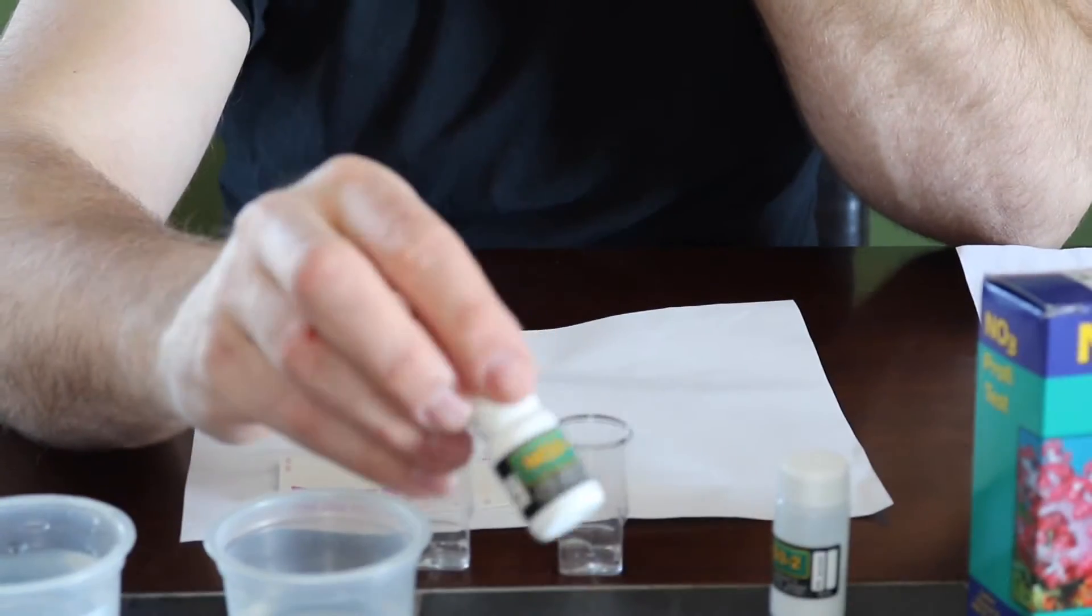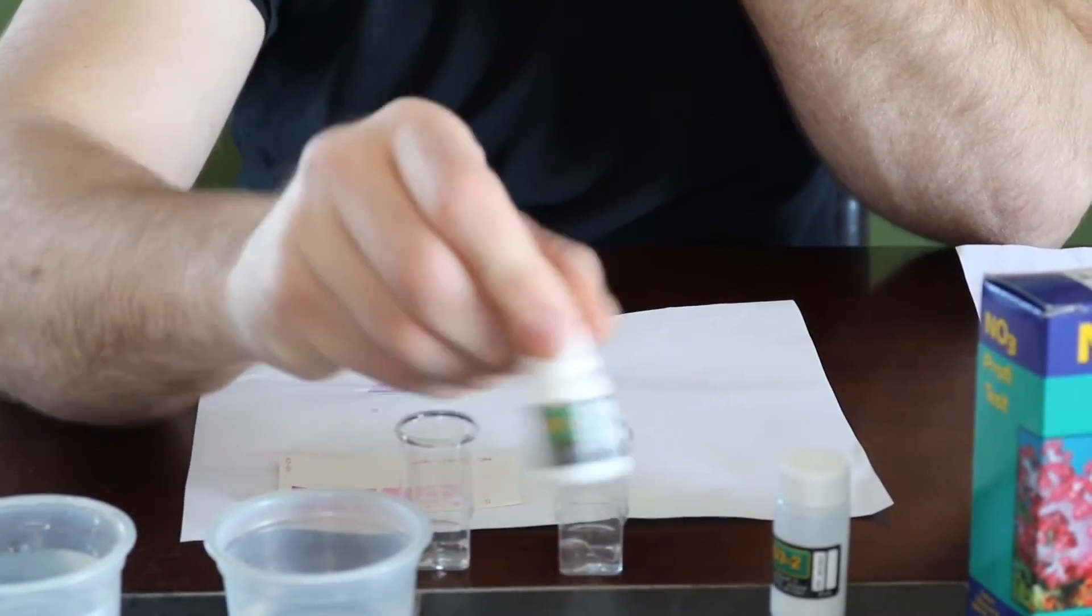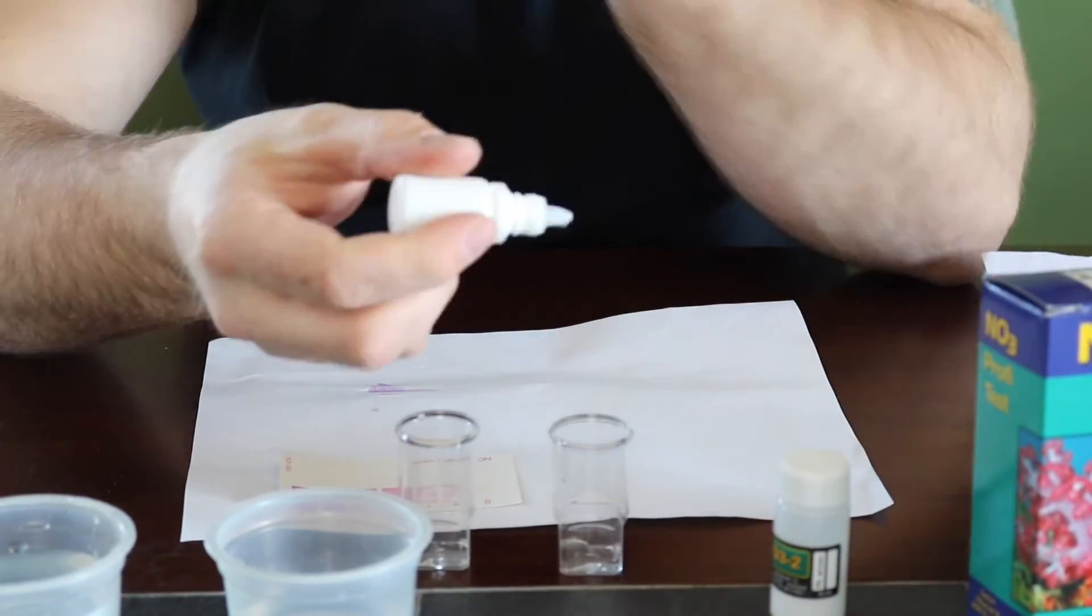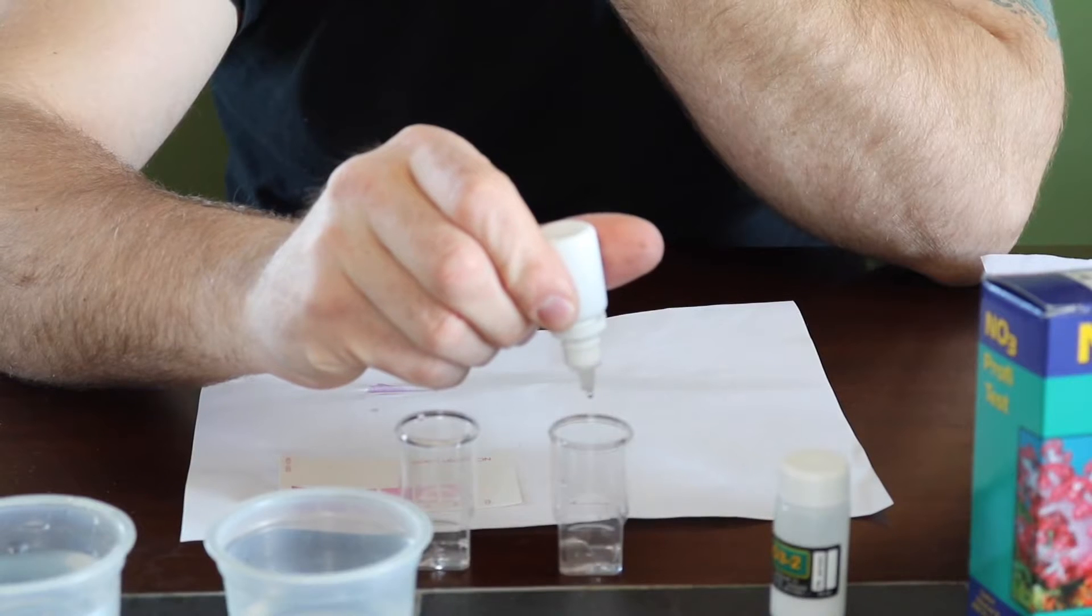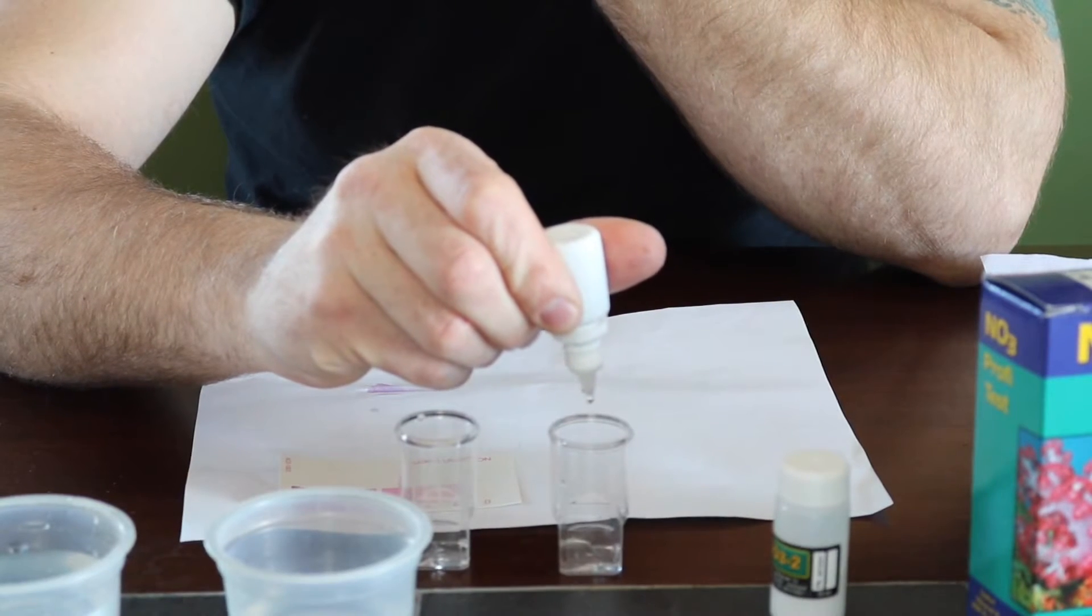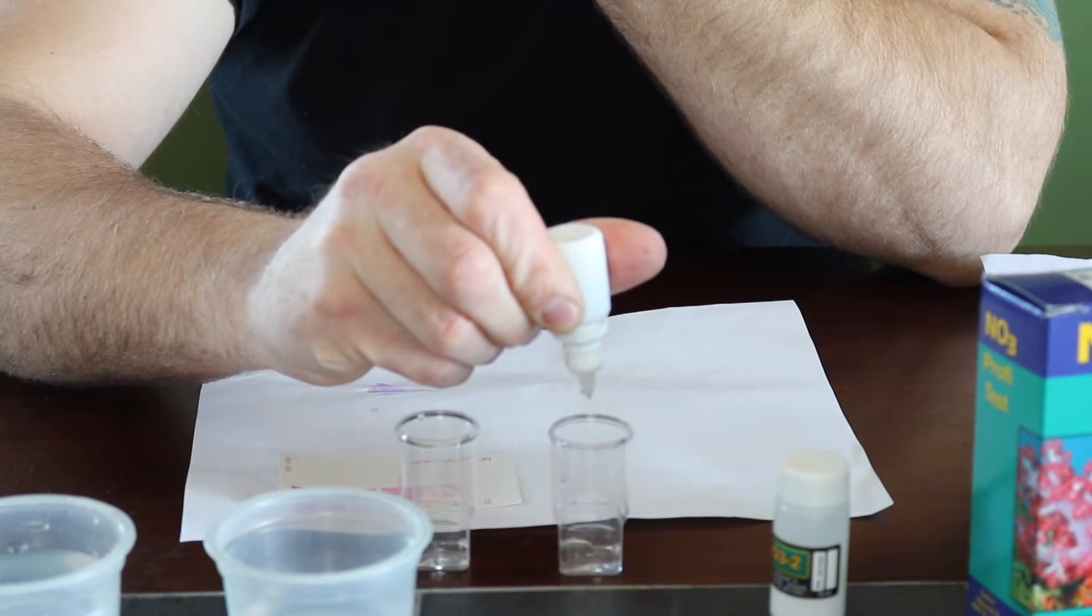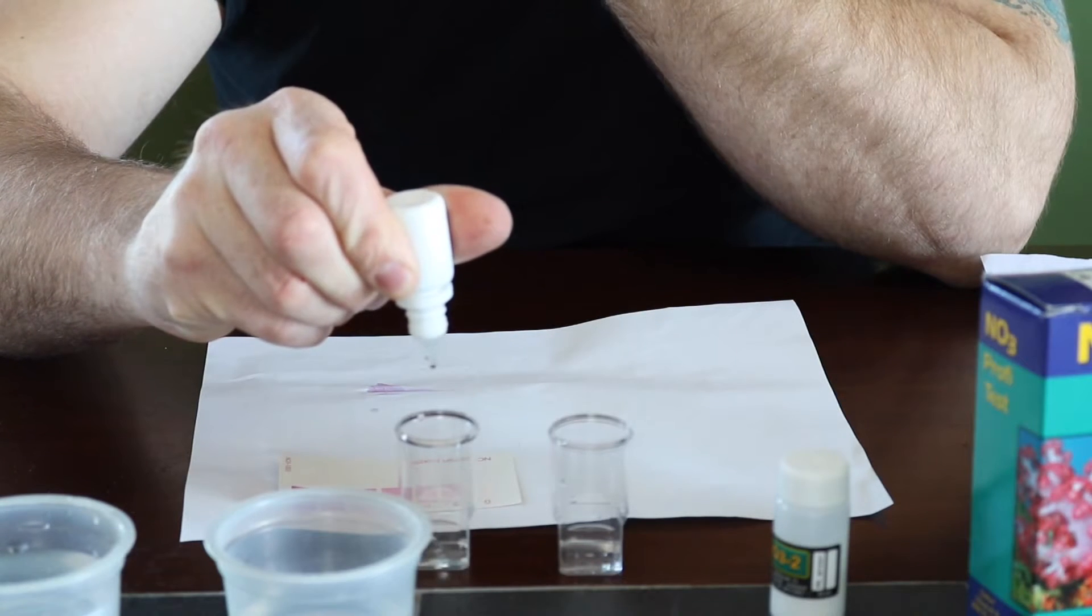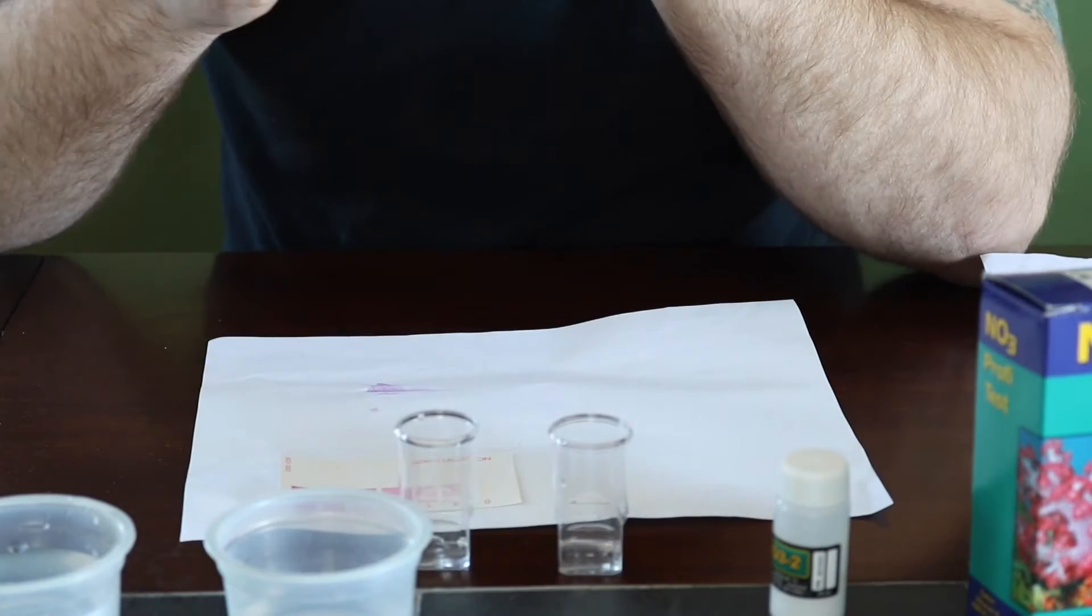So what we need to do now is you need to take your NO3, shake it up a bit. We're going to add four drops per test. So one, two, three, four. One, two, three, four. So we got that in.